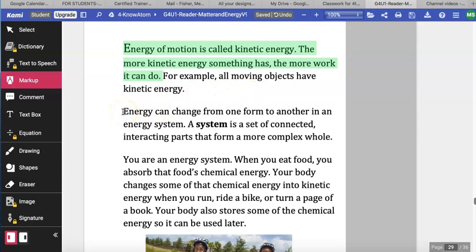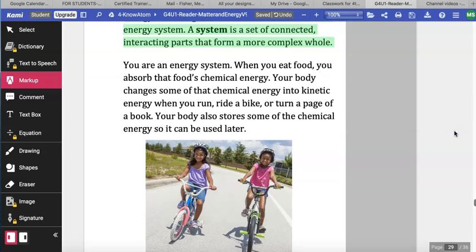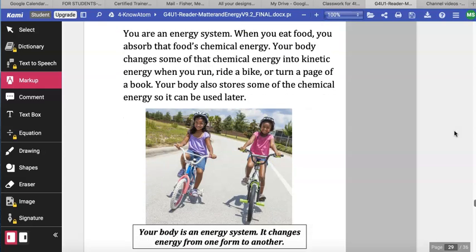Energy can change from one form to another in an energy system. A system is a set of connected, interacting parts that form a more complex whole. You are an energy system. When you eat food, you absorb that food's chemical energy. Your body changes some of that chemical energy into kinetic energy when you run, ride a bike, or turn a page of a book. Your body also stores some of that chemical energy so it can be used later.